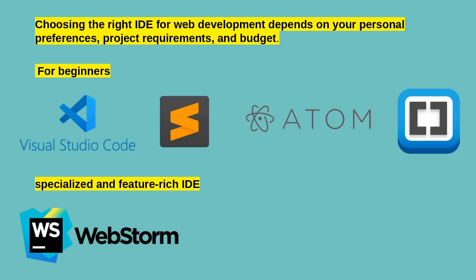Choosing the right IDE for web development depends on your personal preferences, project requirements, and budget. For beginners, free options like Visual Studio Code, Sublime Text, Atom, and Brackets provide a great starting point, offering a balance between features and ease of use. If you are willing to invest in a more specialized and feature-rich IDE, JetBrains WebStorm is an excellent choice. Ultimately, the best IDE for you will depend on your workflow, the languages and frameworks you use, and the level of customization you require. Experiment with different IDEs to find the one that aligns best with your coding style and project needs. In this course, I will be using VS Code.